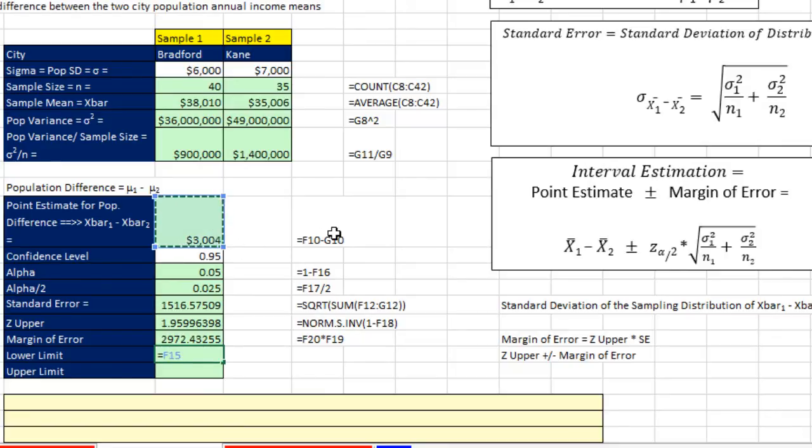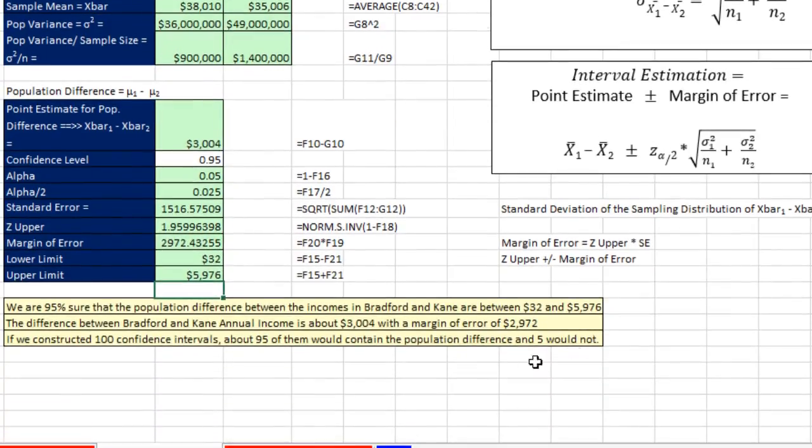That's our point estimate. So we have to add and subtract our margin of error. So for the lower number, I'm going to take my point estimate. That's the difference between these two cities' income, and subtract our margin of error. So the lower number will be 32. And we have the difference between our two sample incomes. So we take that plus our margin of error. And it looks like we get $32 and $5,976.